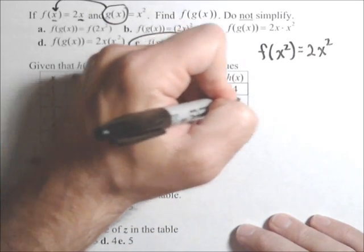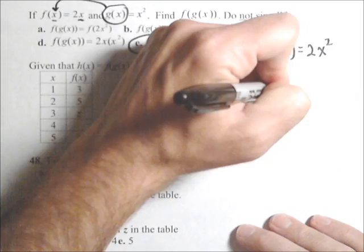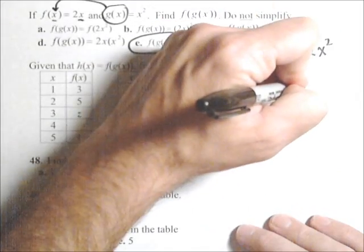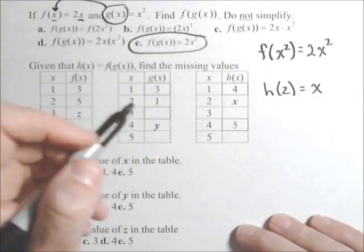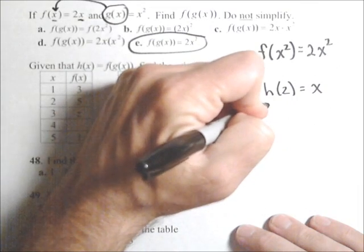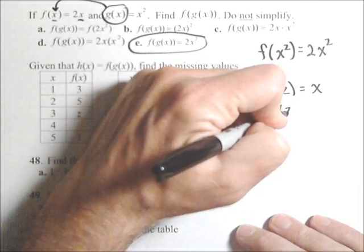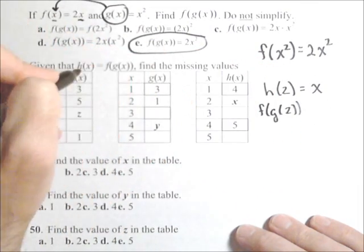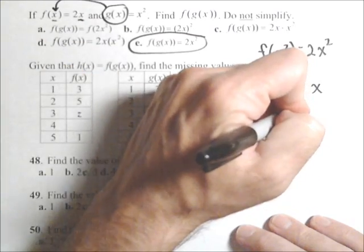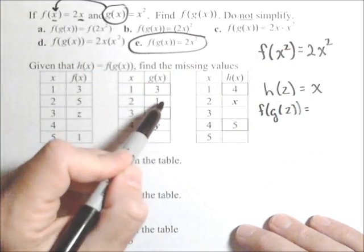x is going to be equal to h of 2 equals x. Let's make a note of that. Well, that's f of g of 2, because h of x is f of g of x. g of 2 is 1.